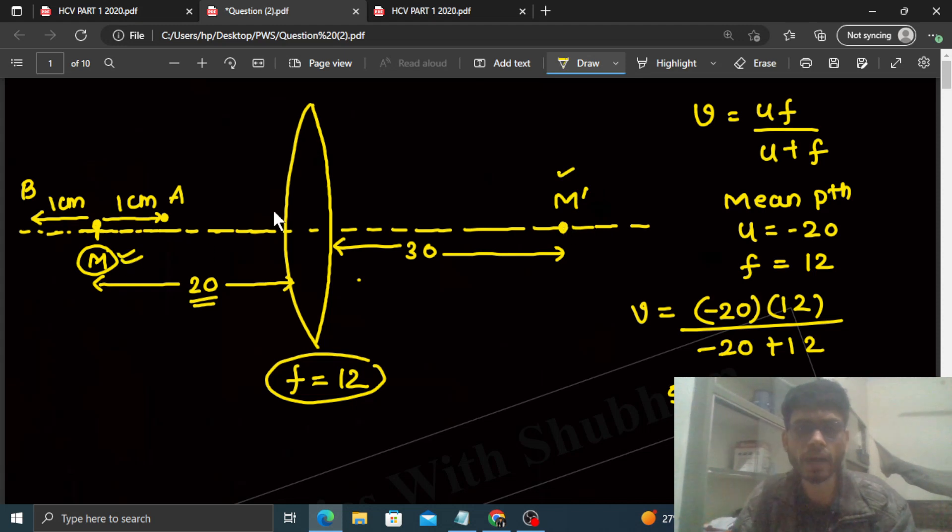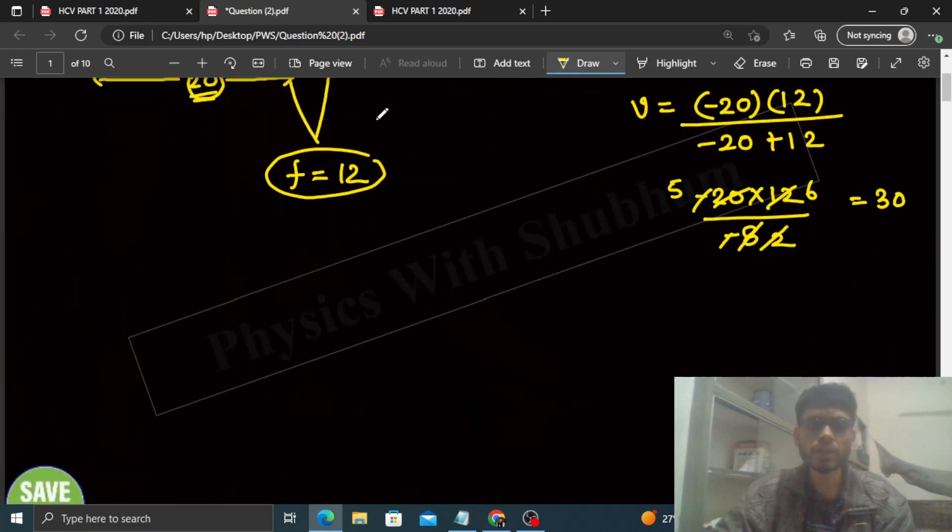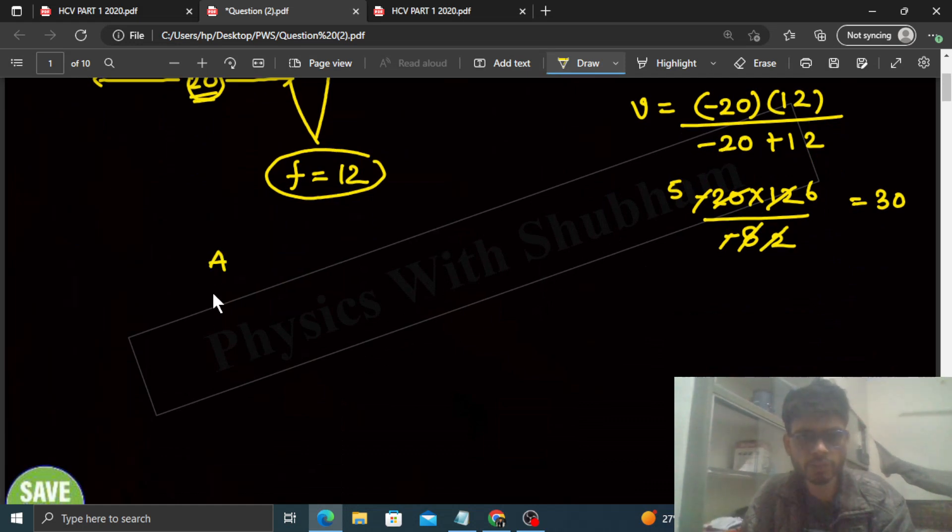Now let's find the image of A. So for A, look - 20 is here at mean position and we will reduce 1 centimeter. So basically the distance of A will be 19 centimeter, right? So for point A, the value of u will be minus 19. f value is constant at 12.